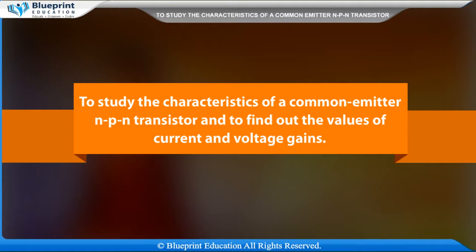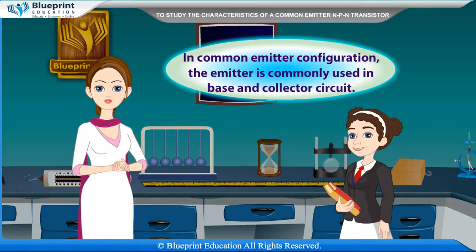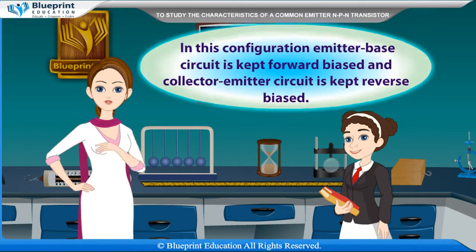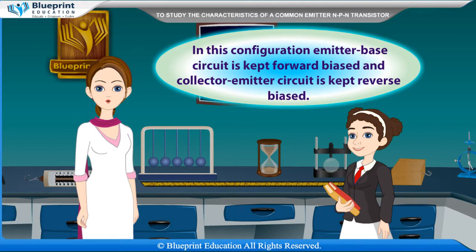To study the characteristics of a common emitter NPN transistor and to find out the values of current and voltage gains. In common emitter configuration, the emitter is commonly used in base and collector circuit.